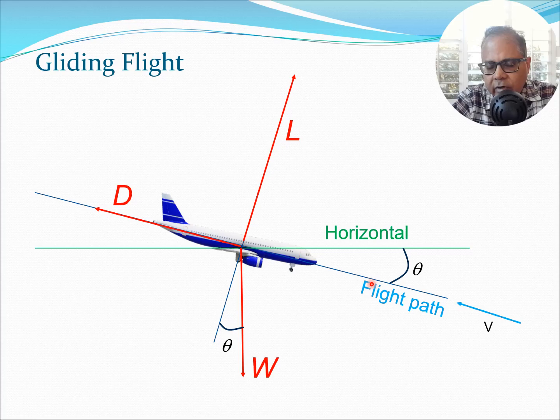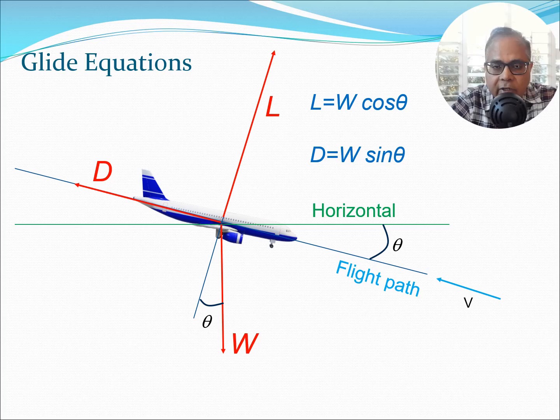You can clearly see here that there will be a weight component in the thrust direction that's going to be W sin θ. So that's going to counter the drag and also the lift is going to be supported by the weight in this direction. Both these are possible if you have a theta here. Generally you want to keep this theta as low as possible because that's going to let you glide at a very good glide path. You don't want to subject passengers to a very steep glide path.